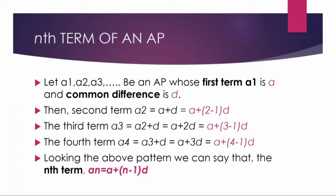The third term A3 equals A plus 2D, which equals A plus (3 minus 1) times D. The fourth term A4 equals A plus 3D, which equals A plus (4 minus 1) times D.